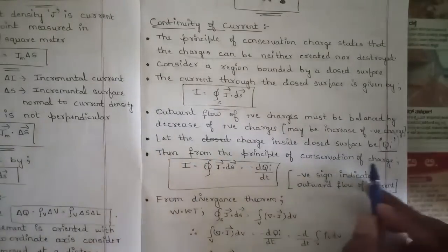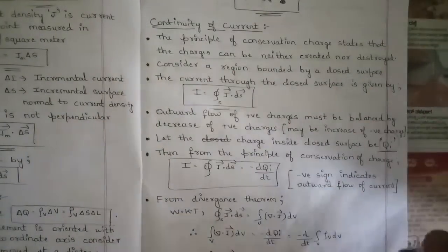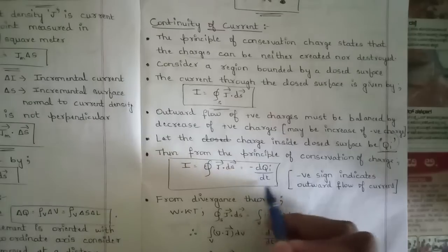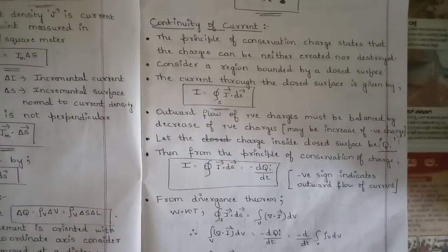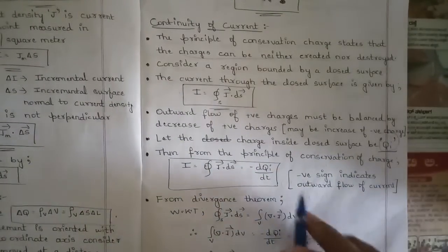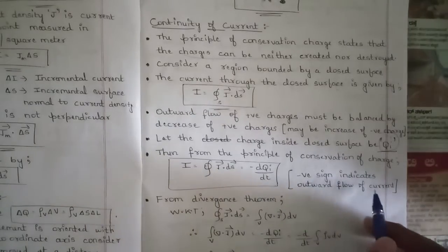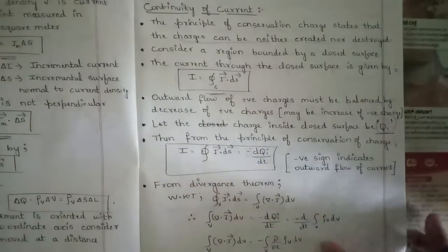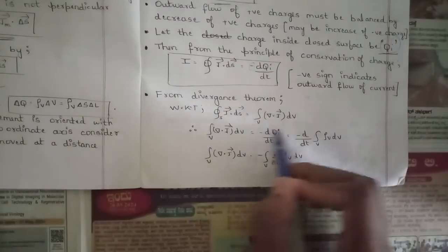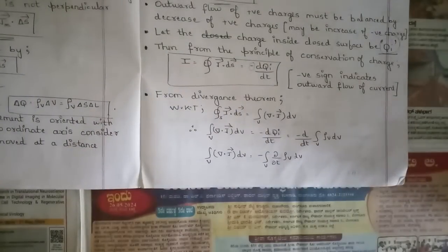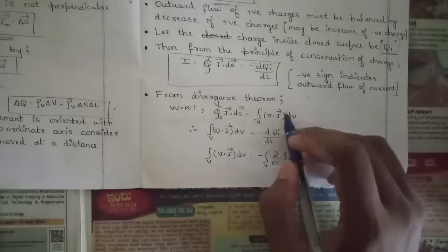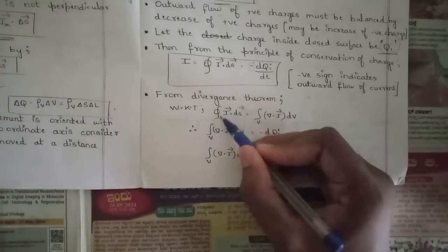From the principle of conservation of charge, I = surface integral of J · dS = -dQ_i/dt, where the negative sign indicates the outward flow of current. From the divergence theorem, the surface integral of J · dS equals the volume integral of (∇·J) dV — here J replaces D since we need current density, not electric flux density.